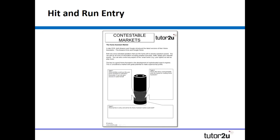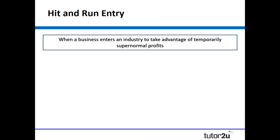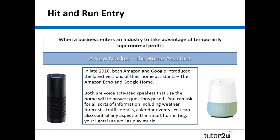The second concept is hit and run entry — I've got another paper-based worksheet. With hit and run entry, a business enters an industry to take advantage of any temporarily supernormal or abnormal profits. For example, we might discuss smartwatches, which began growing in popularity, prompting other manufacturers to consider entering to compete with Apple and Samsung. This time we're thinking about a relatively new market — the home assistant market — with two examples on screen: the Amazon Echo and the Google Home.